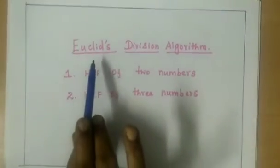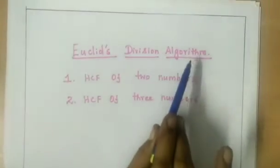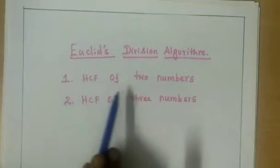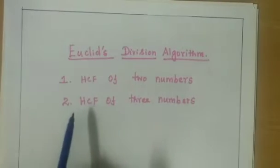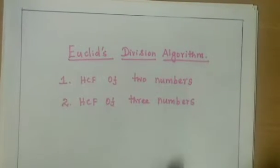Let's see what we do using the Euclid's division algorithm. HCF of 2 numbers and HCF of 3 numbers.